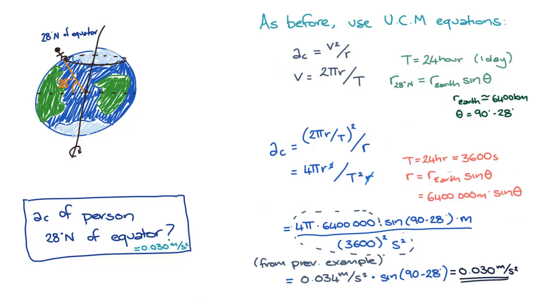Does this look right? Let's check. If our person was back on the equator, theta would be 90 degrees minus 0 degrees, which is equal to 90 degrees, and sin of 90 degrees is 1. So we'd get the same answer as we got previously. That's a good sign.